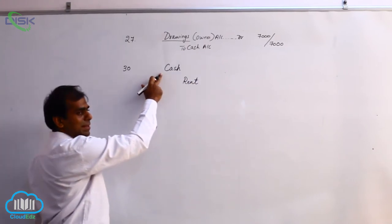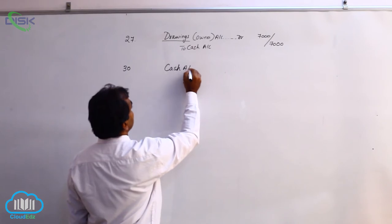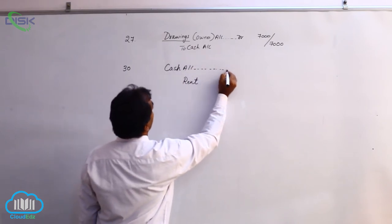Cash is coming in. The real account rule says debit what comes in, so it would be cash account debit.